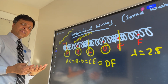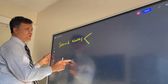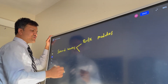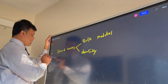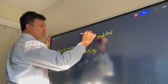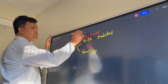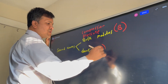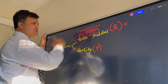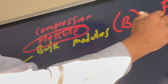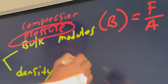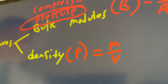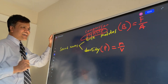Now we're going to do a case study on the sound wave. There are two key things: one is bulk modulus, and the other is density. The bulk modulus is sometimes called pressure and sometimes also called compression. The notation for bulk modulus is B, and density has the notation rho.